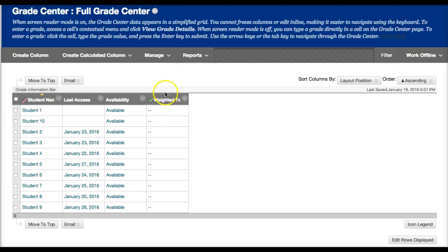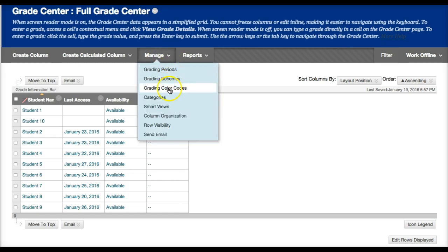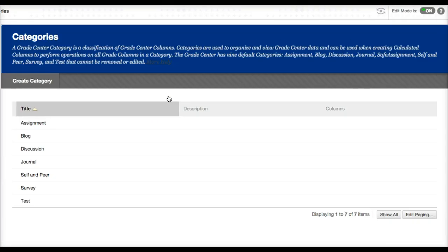To create categories, we need to go to manage and go down to categories. There are a few categories already set up. We can see that the test category is already there.